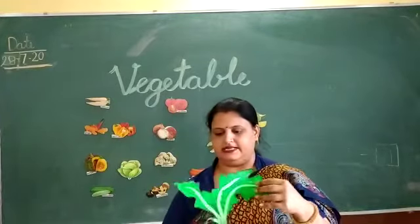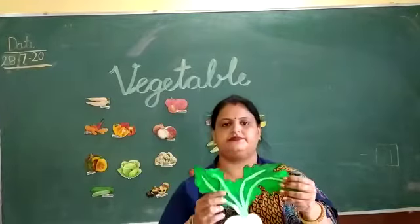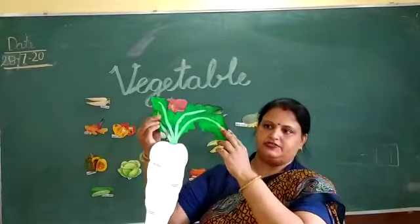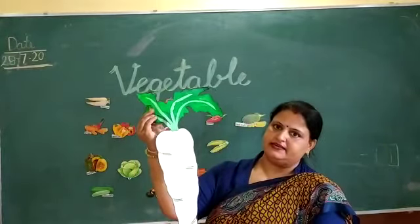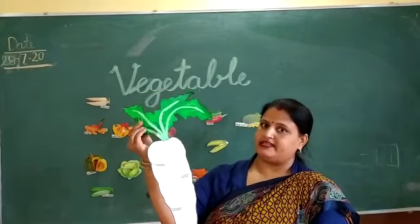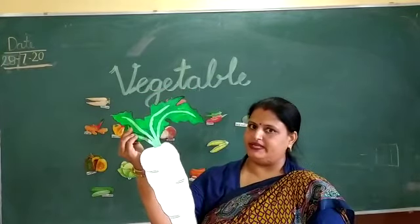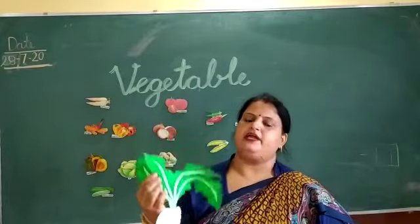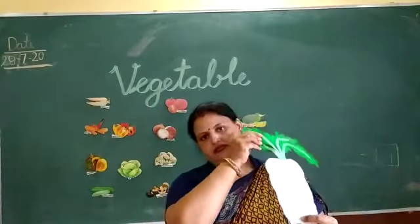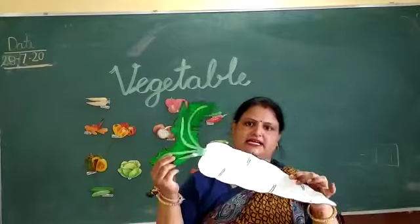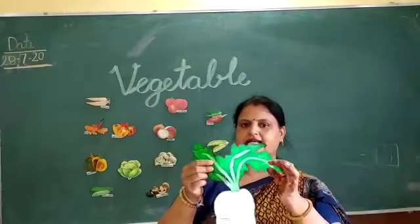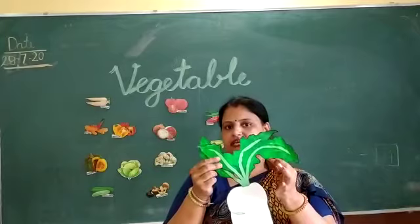Which vegetable is this? Radish. Which vegetable is this? Radish. Radish ko Hindi mein kya kehte hain? Mooli. What is the color of radish? White. What is the color of radish? White. And what is the color of its leaves? Green.